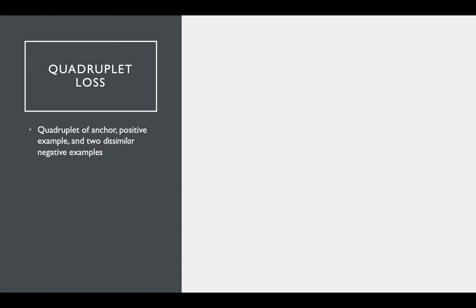Extending the idea of triplet loss, I'll introduce one more contrastive loss function, and that is quadruplet loss. Unsurprisingly, quadruplet loss is calculated using four inputs, an anchor, a positive example, and two negative examples that are dissimilar from each other.